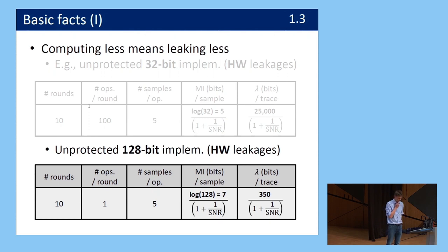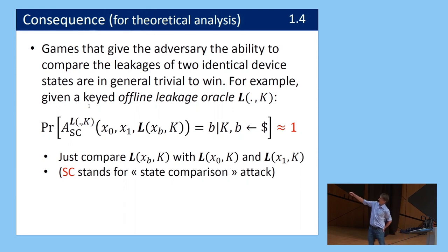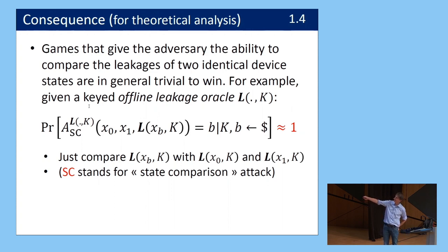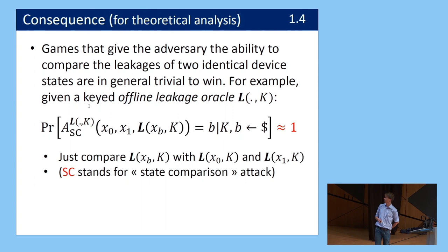This has big consequences for theoretical analysis: if you give the adversary the ability to compare the leakages of two identical device states, it's trivial to win. The adversary picks a key and a bit, chooses two plaintexts X0 and X1, receives the leakage trace of XB, and uses a keyed leakage oracle to produce traces for comparison. Because so many bits are available, winning with probability one is straightforward. I call this a state comparison attack — red because I assume it cannot be prevented. It is impossible to solve this problem.